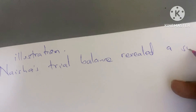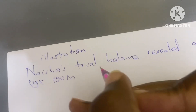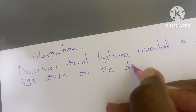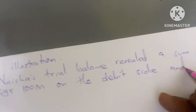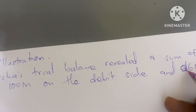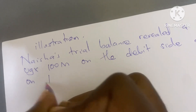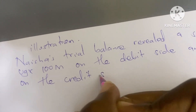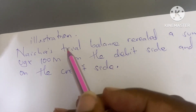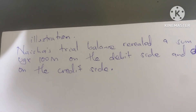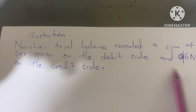...a sum of 100M on the debit side and 96M on the credit side. So Nation's trial balance — the debit side had 100M and the credit side had 96M, meaning it was not balancing.